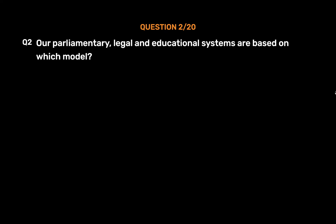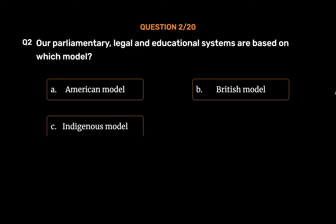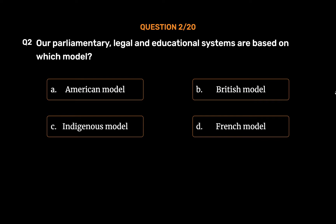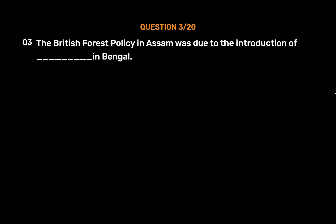Question 2: Our parliamentary, legal, and educational systems are based on which model? Options: A. American model, B. British model, C. Indigenous model, D. French model. The correct answer is Option B: British model. Our parliamentary, legal, and educational systems are based on the British model because their foundations in India were laid down by the British colonizers.